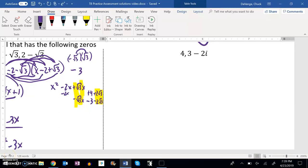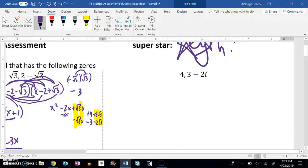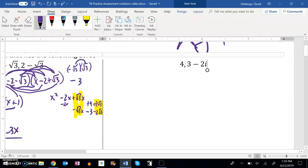All right, this is PreCalc Topic 8 Practice Assessment. We're doing the second problem on it. We're supposed to find a polynomial that has those zeros.